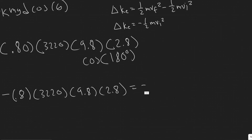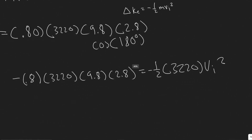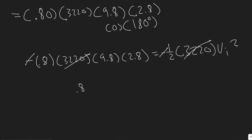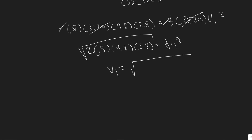The negatives cancel and the mass of 3220 cancels from both sides. This leaves 0.8 times 9.8 times 2.8 equals one half V_initial squared. Multiplying both sides by 2 and taking the square root: V_initial equals the square root of 2 times 0.8 times 9.8 times 2.8, which gives approximately 6.626 m/s.